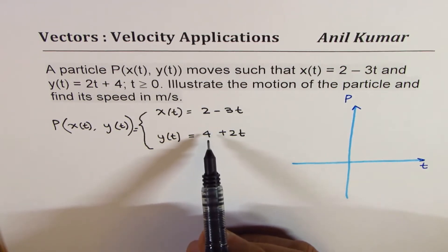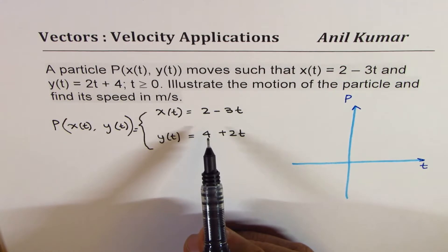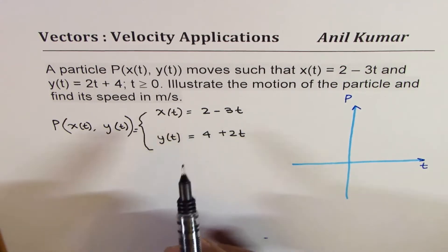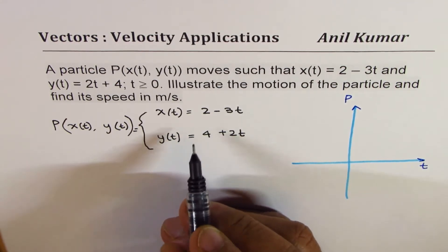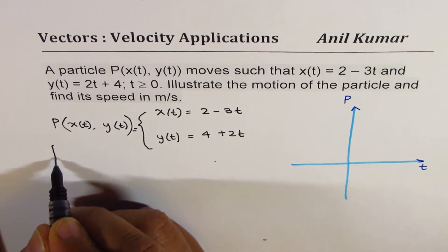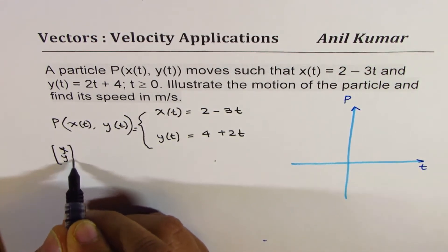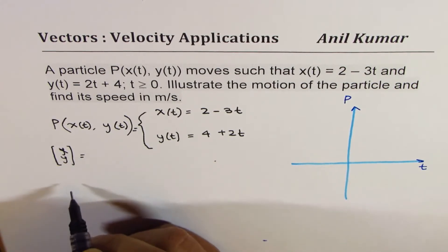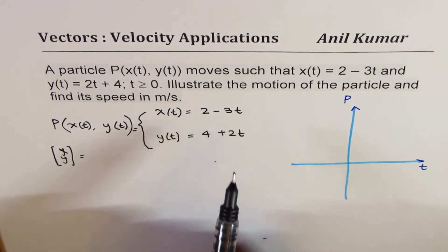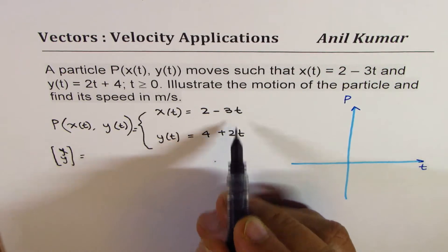This gives you the equation of the motion of the particle in parametric form. We could actually write this in vector form also, or we could write it like we do.